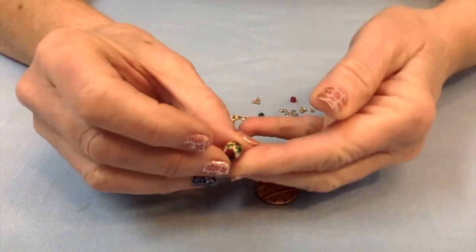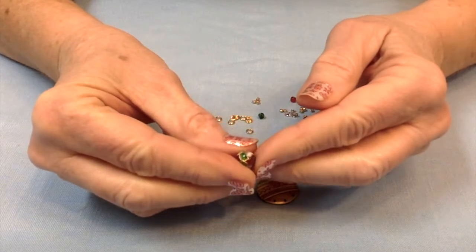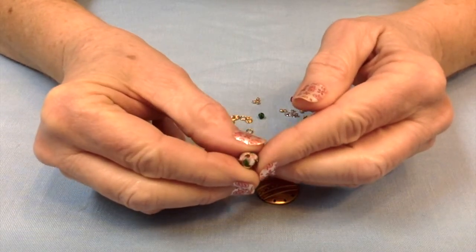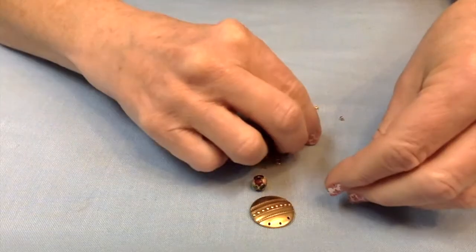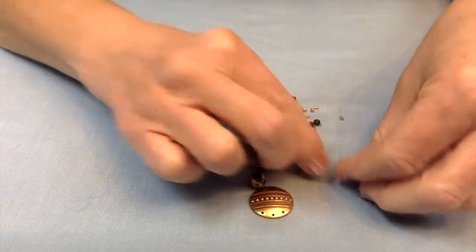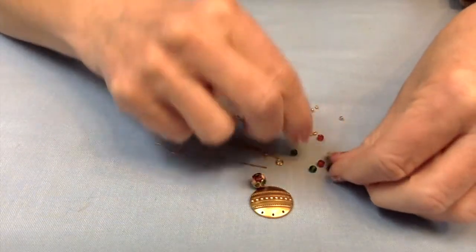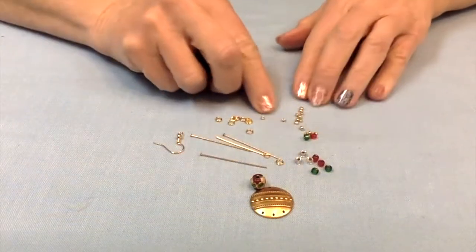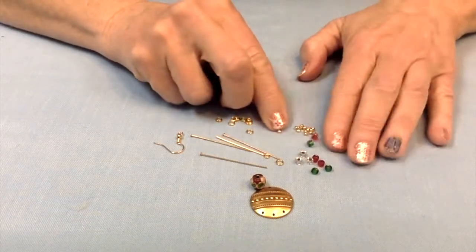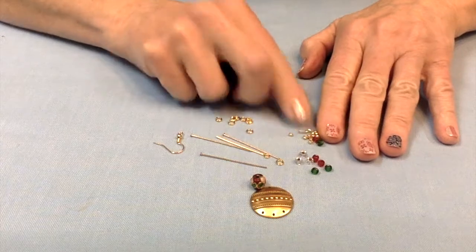So I have some cloisonne Christmas color beads. I think they are so pretty and I want to put this at the top and then at the bottom here I want to hang these e-beads. I have them in green, red and kind of a clear color, and then I'm going to use these tiny little gold colored seed beads.